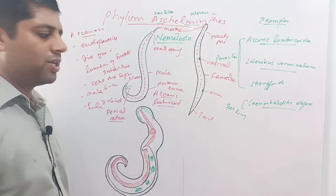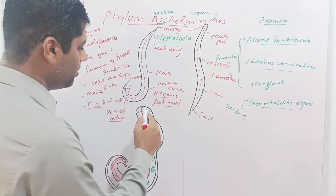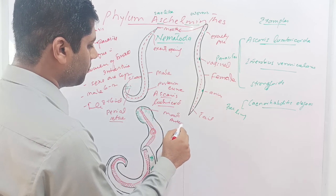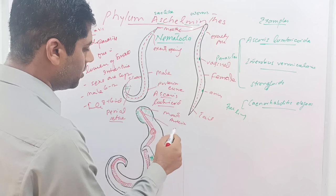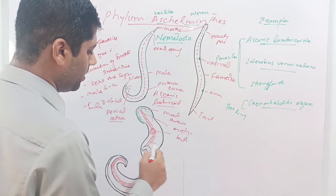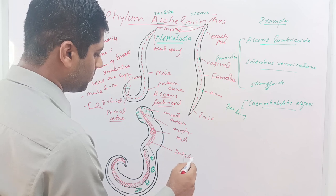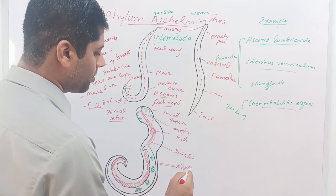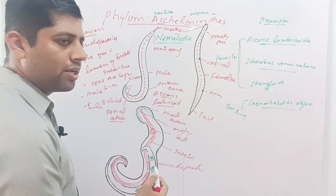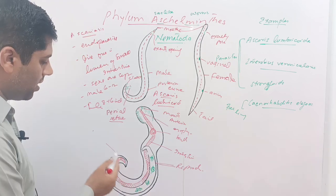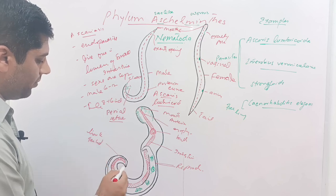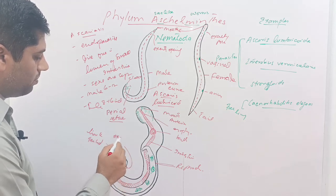The second worm is Enterobius vermicularis. We label the diagram: the anterior end has the mouth, followed by the esophagus, a bulb, and then the intestines. The reproductive organs — containing the vagina or testes — are present, and the tail is coiled or hook-shaped with an excretory pore.